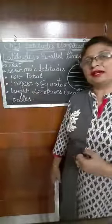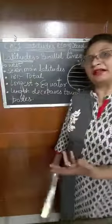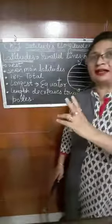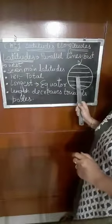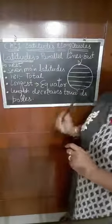First we will start with latitudes. Latitudes are imaginary parallel lines that run from east to west. We cannot see them. These are imaginary lines which are parallel to each other. All lines which run parallel to each other from east to west are called latitudes.